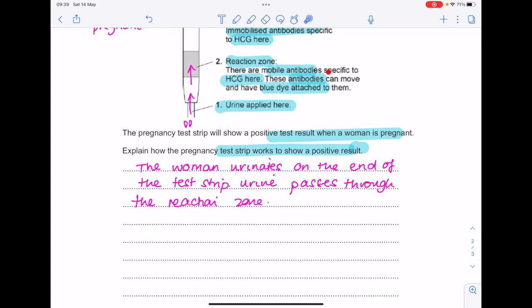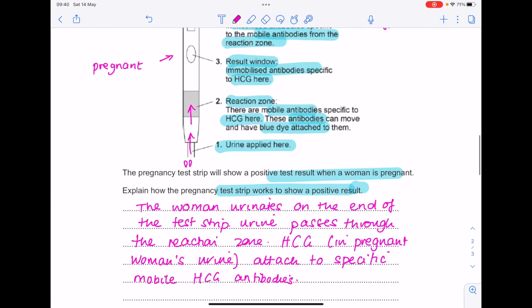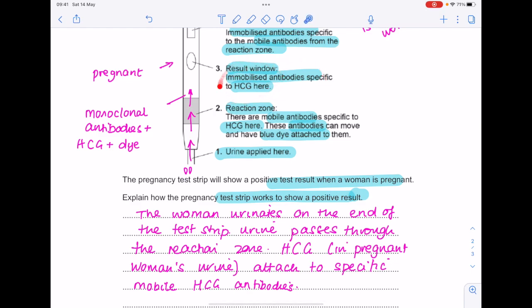And we know that that urine is going to move through and soak through that reaction zone. Then the reaction zone tells us what happens next. Mobile antibodies specific to that HCG hormone in the urine will attach to the HCG. So HCG in pregnant woman's urine attached to specific mobile HCG antibodies. And so at this point we know that the monoclonal antibodies are moving upwards, they have the HCG attached as well as that blue dye.